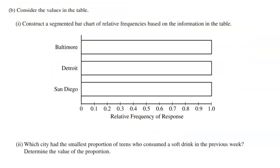Now they follow up by asking us to construct a segmented bar graph to show those relative frequencies. Remember, relative frequencies is just a fancy word for proportions. We have three bars — one for Baltimore, one for Detroit, and one for San Diego.